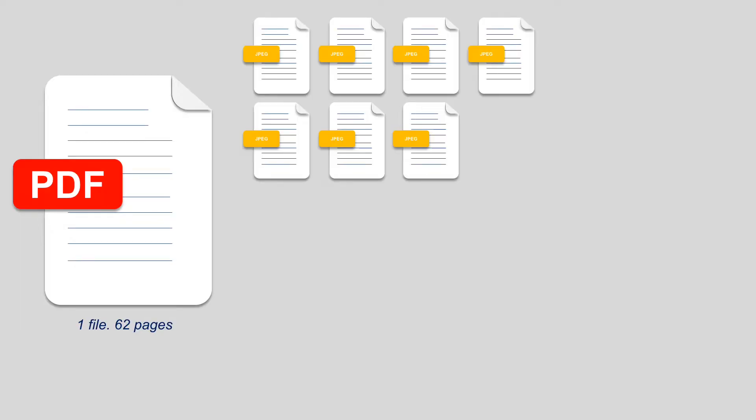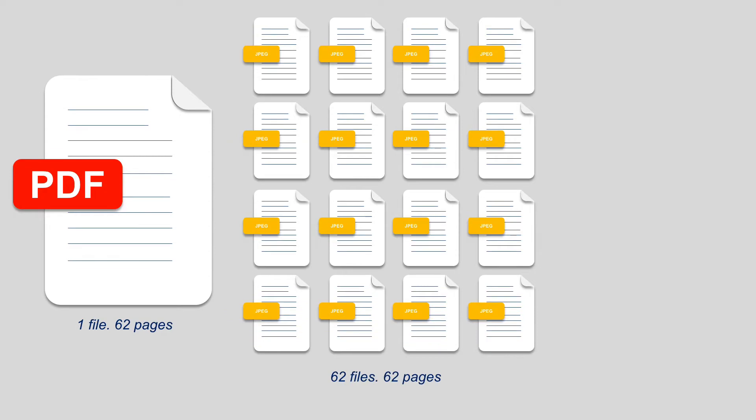I put together a quick demonstrative to show you the workflow. You might have a PDF that's 62 pages long — one file with 62 pages. What you need to do is convert that one file into 62 individual files, one file per page. The way to do that is using Adobe Acrobat — you'll need a version that's not the free version.